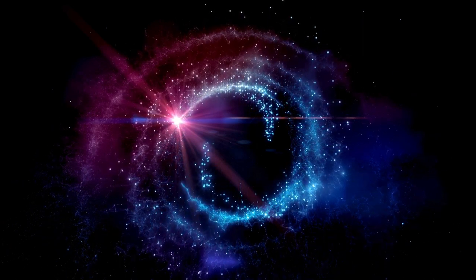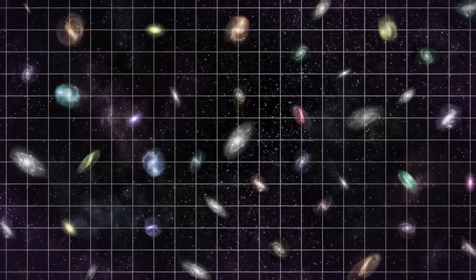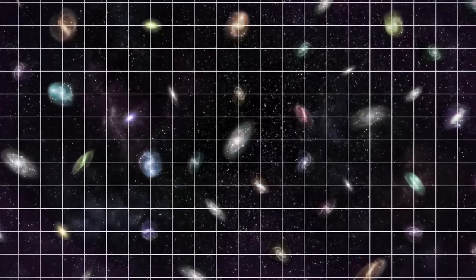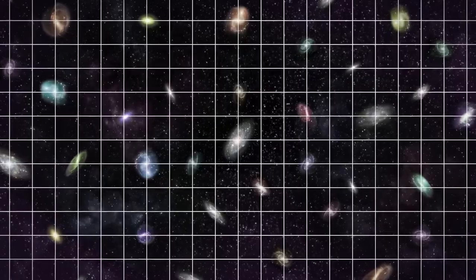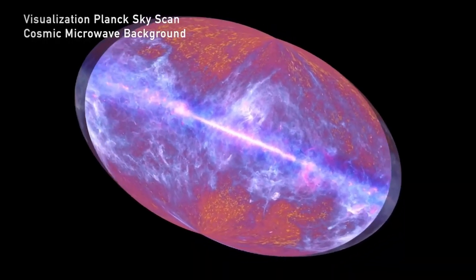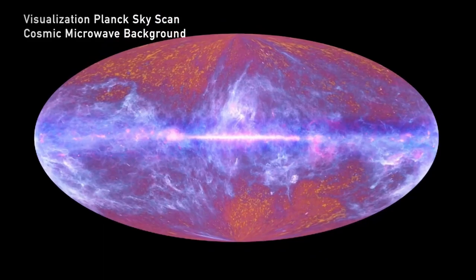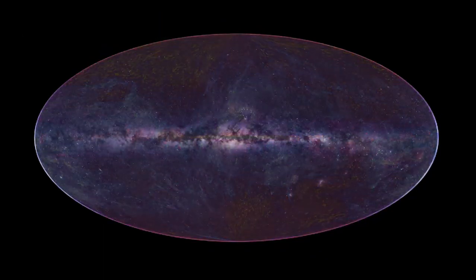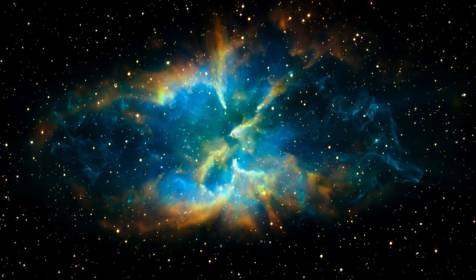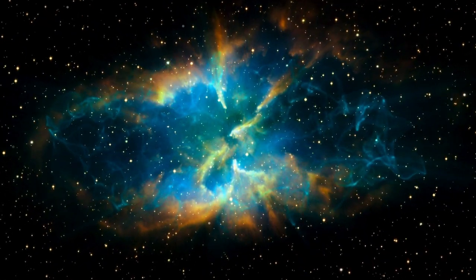Then there's another method where we know how bright distant supernovas are supposed to be, and we can compare that to how bright they appear when we measure them. We can then use that information to estimate the expansion rate of the universe at the time of the supernova. When we calculate the expansion rate using this method, also called standard candles, this is what we get.